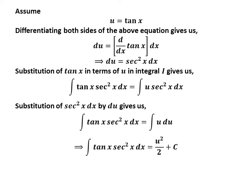Integral of u with respect to u is square of u upon 2. So, integral of tangent of x times square of secant of x is equal to square of u upon 2 plus capital C. Capital C is the arbitrary constant of indefinite integral. Never forget to add this constant at the end of any indefinite integral.